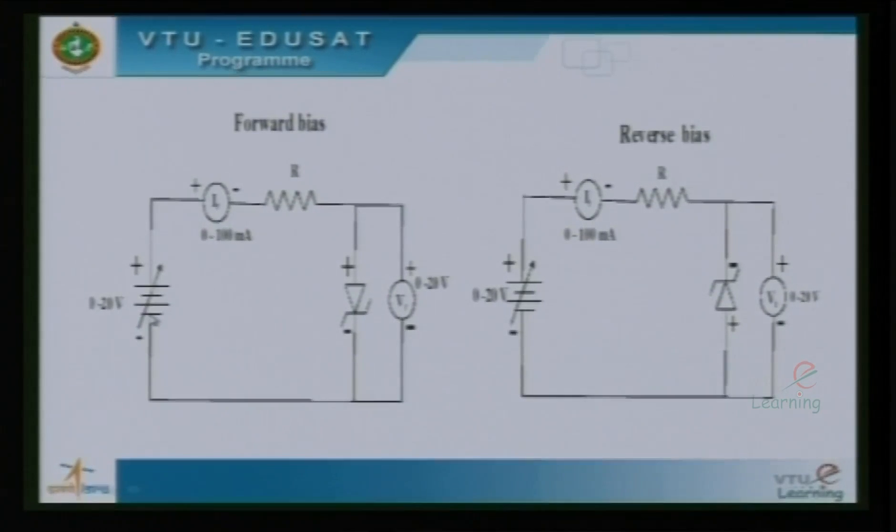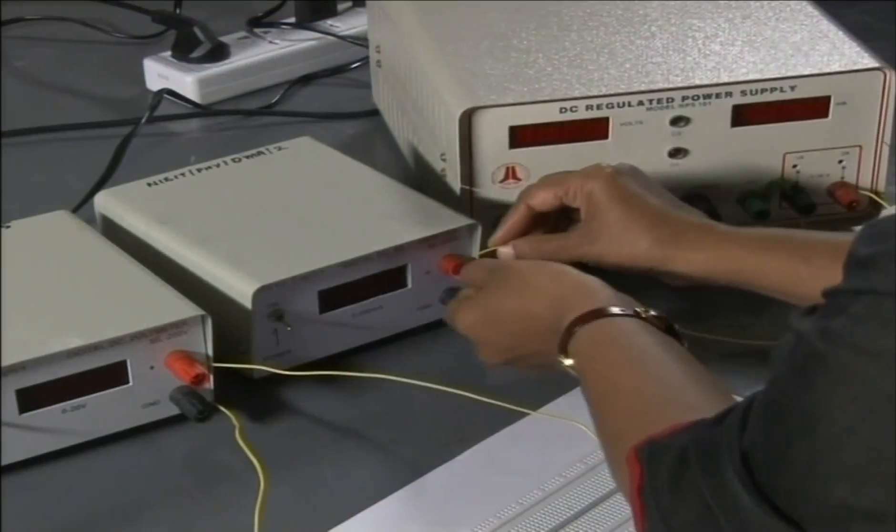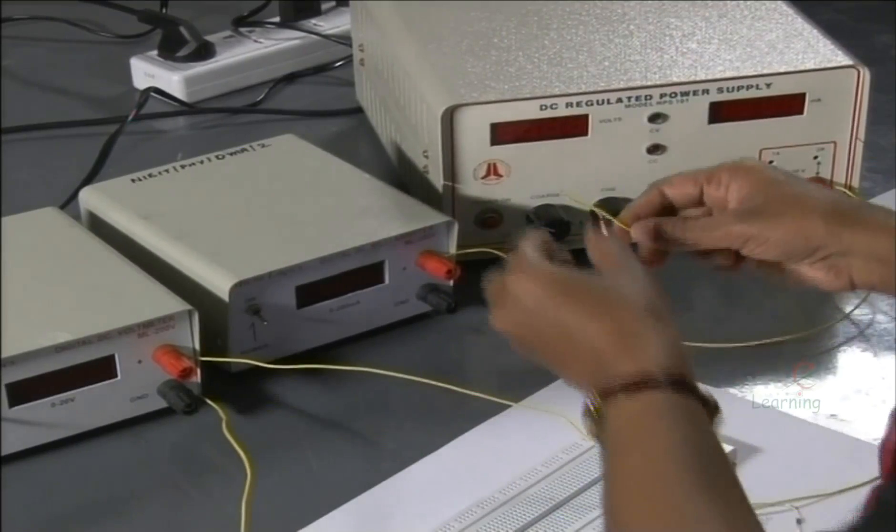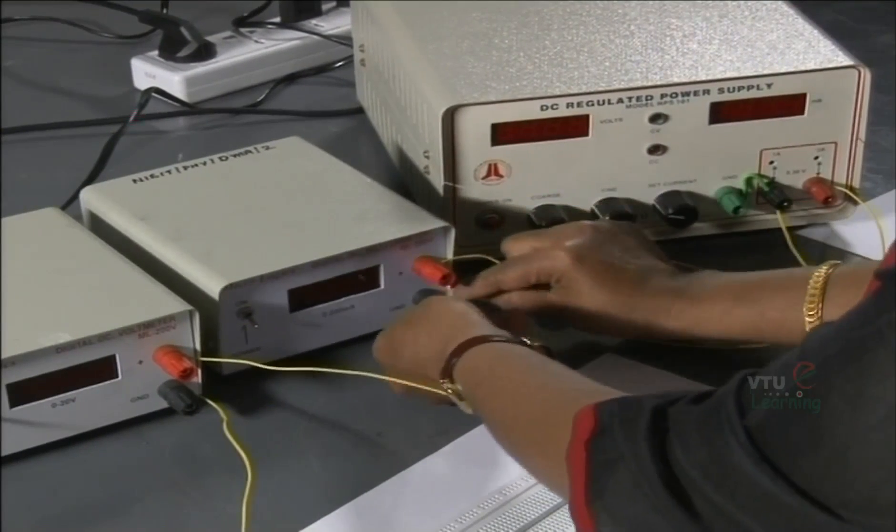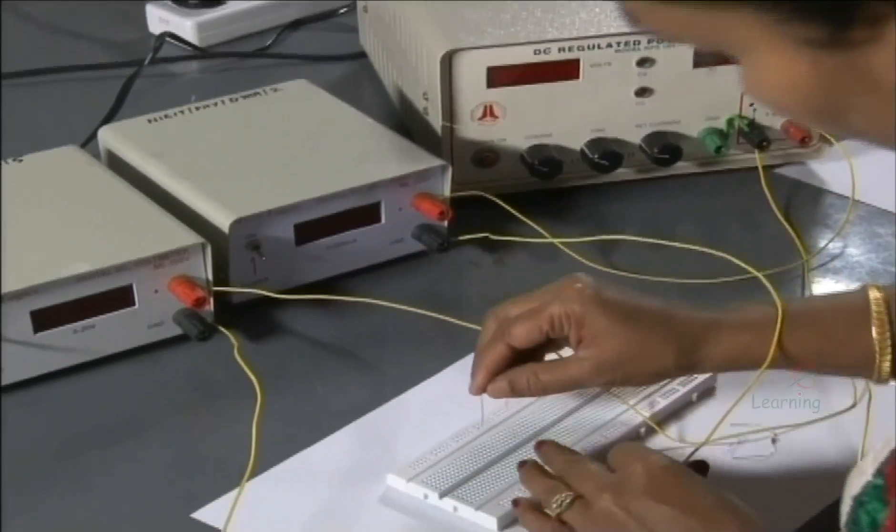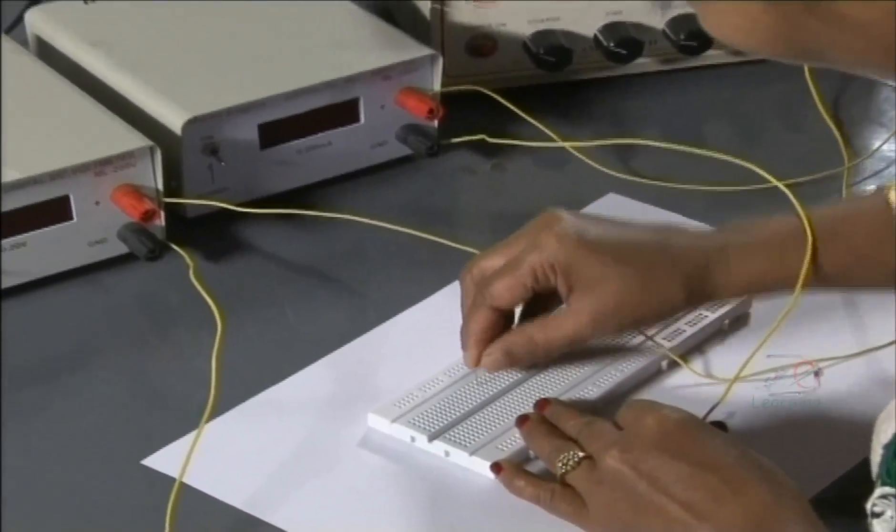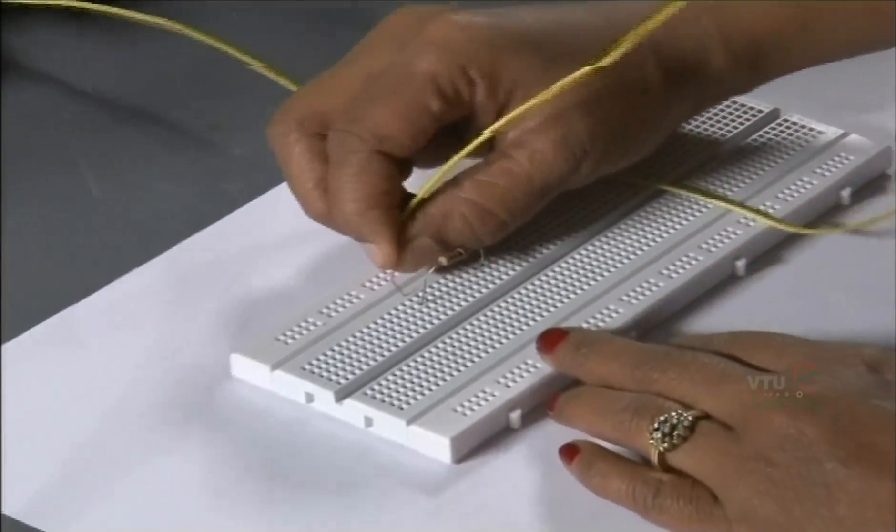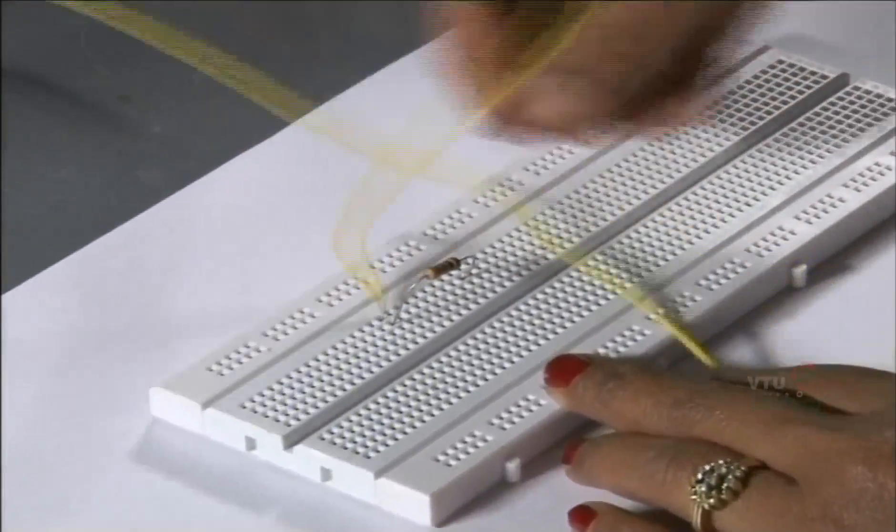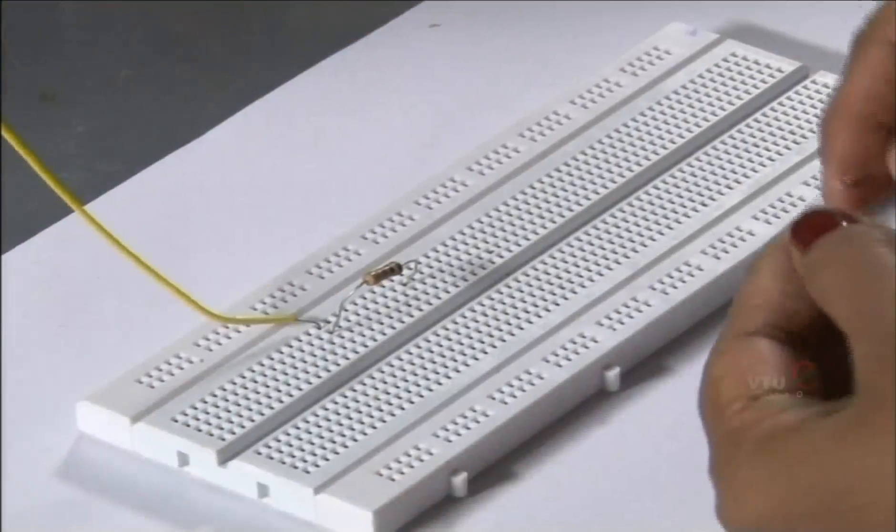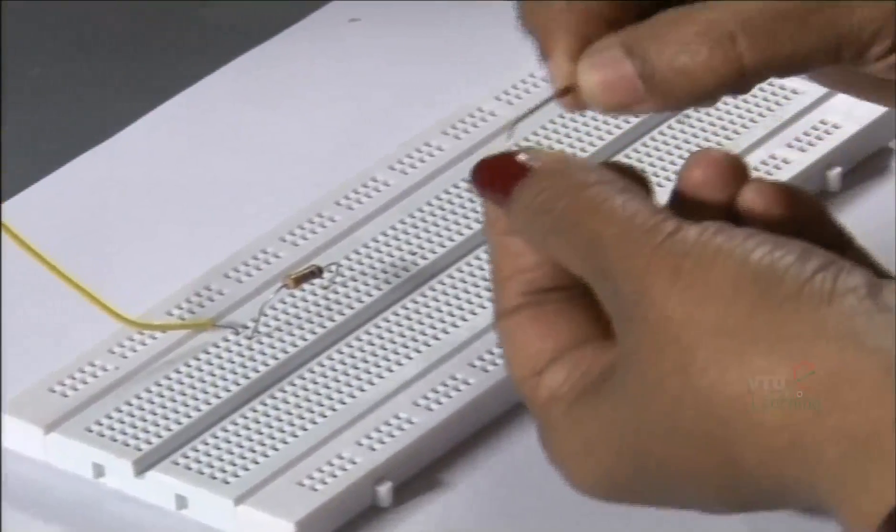The positive terminal of the power supply is connected to positive terminal of the milliammeter. The negative terminal of the milliammeter is connected to one end of the resistor which I am going to mount it on the breadboard. Next end of the resistor is connected to the positive terminal of the diode.